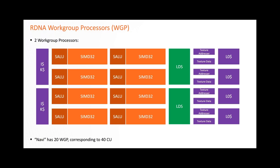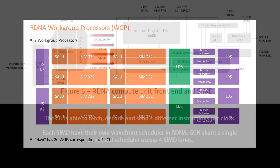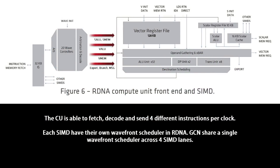With RDNA, the SIM16 is changed to a SIM32 pipeline, and two of them along with two scalar ALUs make up a compute unit. The ratio of scalar versus vector pipelines per CU has changed from 1 in 4 to 1 in 2, and as gaming graphics has become heavier on scalar operations, the effective IPC of an RDNA CU has increased compared to GCN. Another major change is that each SIM32 has its own wavefront scheduler, whereas on GCN, four SIM16 within a CU share a single scheduler that alternates between one of four pipelines each cycle.